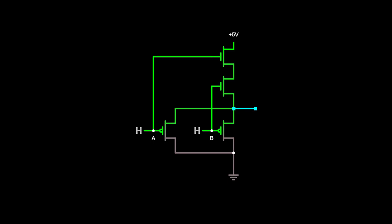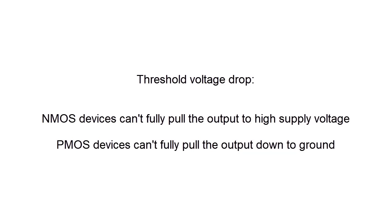Unfortunately, this doesn't work, or more accurately, doesn't work well because of a phenomenon called a threshold voltage drop. NMOS devices can't fully pull the output to the high supply voltage, so you don't want to use them in the pull-up network.